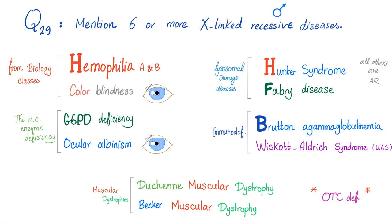which is G6PD deficiency. Since we had an item about vision, let's add ocular albinism. Then for lysosomal storage diseases, we have Hunter syndrome and Fabry disease. All of the other lysosomal storage diseases are autosomal recessive, not X-linked recessive — except two: Hunter and Fabry.